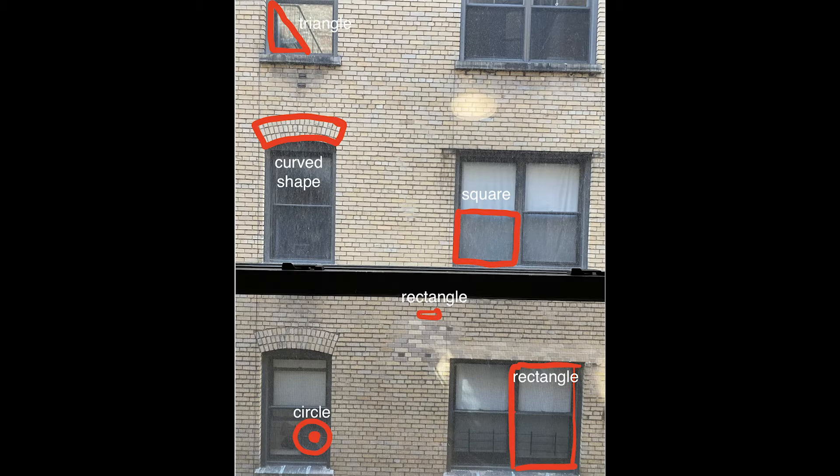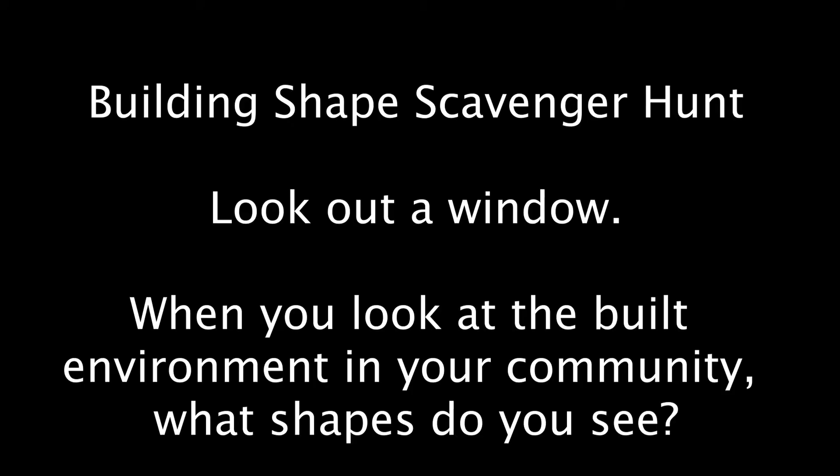Now for our next activity, you're going to do the same thing — look outside a window and see what shapes you can find. If you don't have a window, you could look through a door into another room or look around a place you haven't explored for shapes before. If you're looking at the built environment, you'll probably see geometric shapes. But if you see a living thing like a tree, a person, or an animal, that would be a good example of organic shapes.